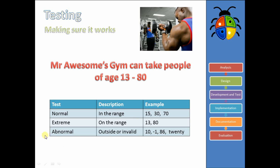Our last type of test data is the abnormal type. This is anything that's just wrong, weird, or strange — outside or invalid. So a number less than 13, like 10; something weird like minus 1; more than 80, like 86; or just invalid, like '20' written in text when it has to be a number — wrong data type or something completely unexpected would be abnormal data. We normally remember it as: in the range, on the range, past the range — or in the range, on the range, outside the range.